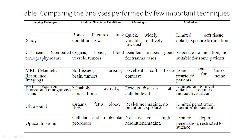PET scan stands for Positron Emission Tomography. It is used to study metabolic activity, such as in cancer and brain studies. Its advantage is detecting disease at the cellular level — in the cells themselves — making it more advanced than MRI in that regard. Limitations include limited anatomical detail and the requirement for a radioactive tracer.